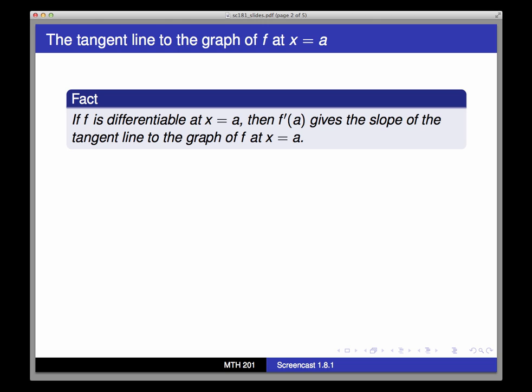First, let's recall that if f is differentiable at x equals a, then f prime of a, the derivative, tells us the slope of the tangent line to the graph of f at x equals a. More specifically, the point to which the tangent line is attached has an x-coordinate of a and a y-coordinate of f of a.